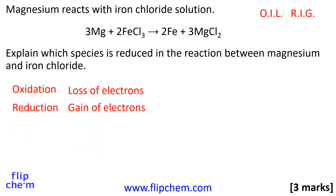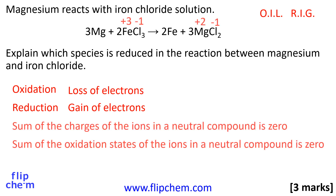In this reaction, a metal reacts with an ionic substance to make a different metal and a different ionic substance. Think about the charges on the ions in the ionic substances. Oxidation state indicates how many electrons an atom has lost or gained. At GCSE, oxidation state is similar to the charge on an ion.